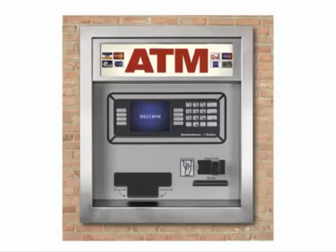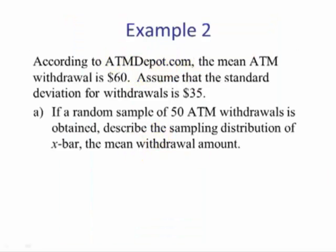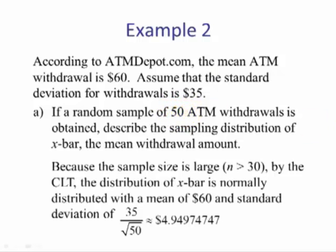Let's look at another example. According to this website, the mean ATM withdrawal is $60. Assume that the standard deviation for withdrawals is $35. Part A: If a random sample of 50 ATM withdrawals is obtained, describe the sampling distribution of x-bar, the mean withdrawal amount. Since our sample size is 50, which is 30 or more, we know from the central limit theorem that the distribution of x-bar is normally distributed. Its mean equals the population mean, $60, and the standard deviation is 35 divided by the square root of 50.